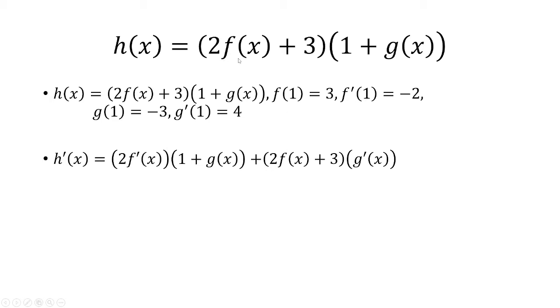Plus 2 times f of x plus 3, times the derivative of 1 plus g of x. The derivative of 1 is 0, and the derivative of g of x is g prime of x.